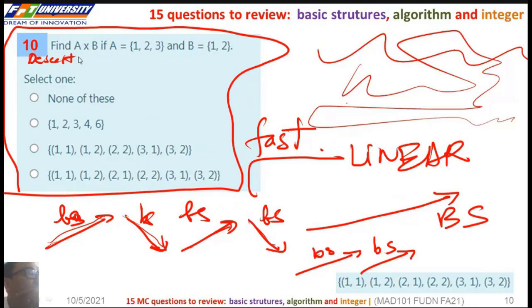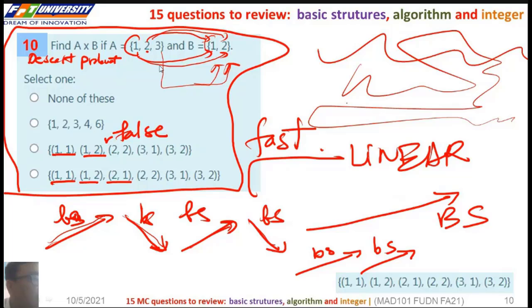We want to find the Cartesian product. So here, 1 and 1. 1 and 2. And then 2 and 1. Oh, here false. 2, 1. 2, 2. 3, 1. 3, 2. So this is the correct answer.